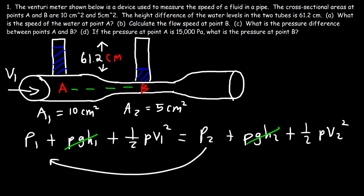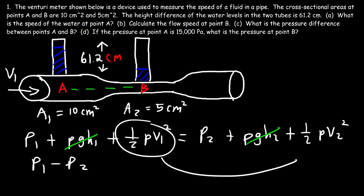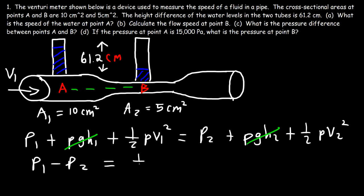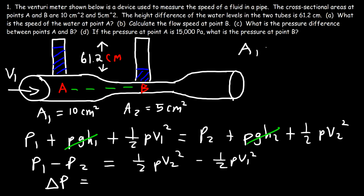Taking P2 and moving it to the left side, we get P1 minus P2 on the left, and moving the V1 term to the right gives us P1 - P2 = ½ρV2² - ½ρV1². The difference in pressure at points A and B, P1 minus P2, we can call delta P. The volume flow rate at points A and B must be the same. The volume flow rate is area times velocity, so by the equation of continuity for an incompressible fluid: A1·V1 = A2·V2. Solving for V2, the velocity at point B: V2 = (A1/A2)·V1.